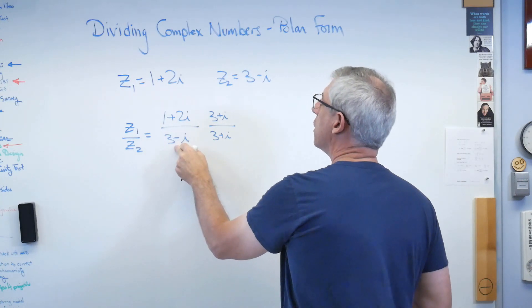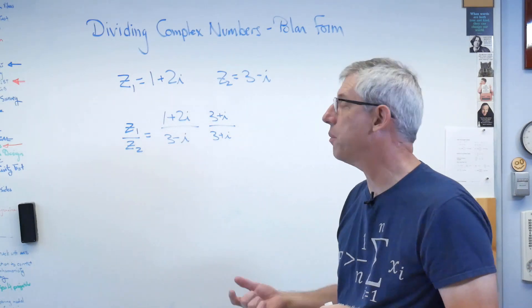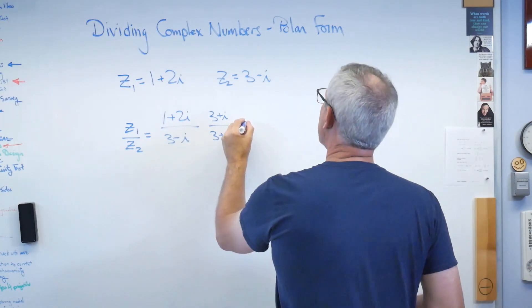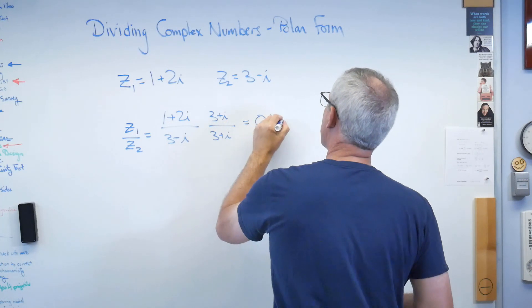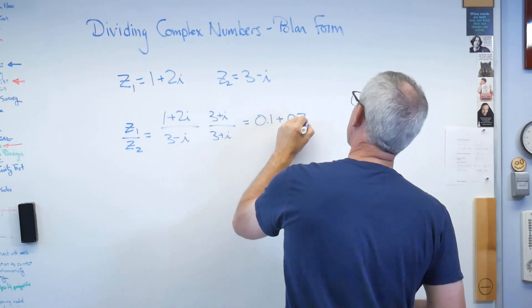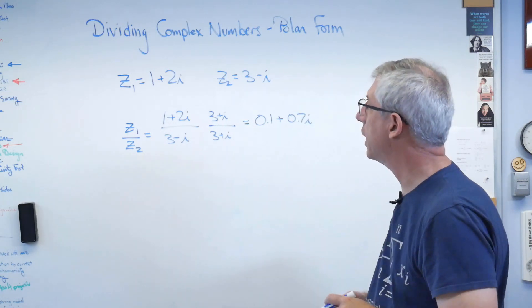The complex conjugate of 3 minus i is 3 plus i. You reverse the sign of the complex term. When you do that, a number multiplied by its complex conjugate is a real number. In this case, I think it's 10. You work this out, and you get 0.1 plus 0.7i. That's how to do this in rectangular form, just to catch us up.